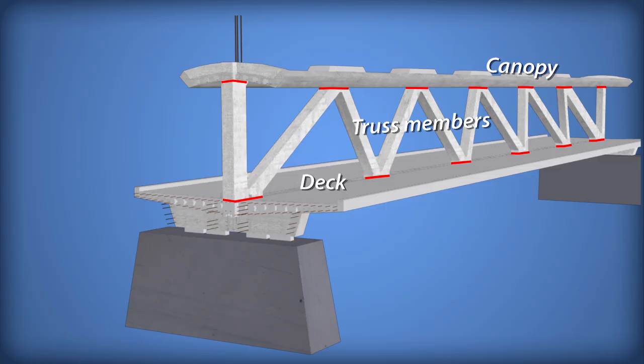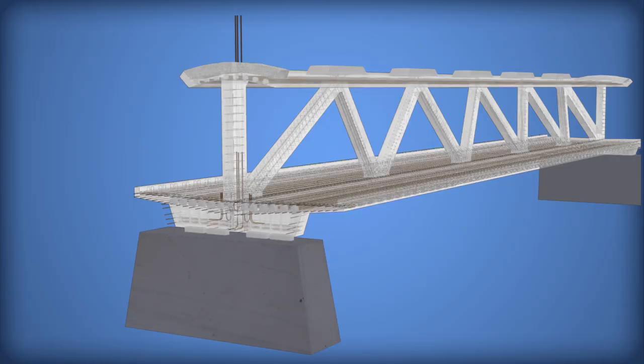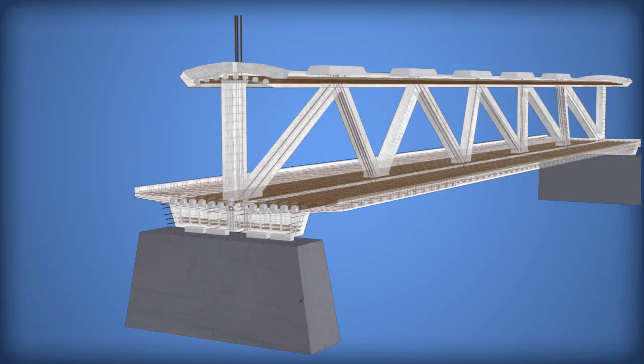Within the concrete, reinforcement was provided by steel bars and larger diameter steel post-tensioning rods. These rods were pulled in tension and locked into place after the concrete had cured in order to ensure that the concrete was loaded in compression.